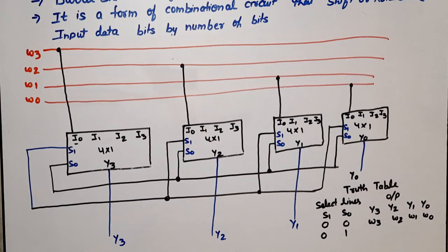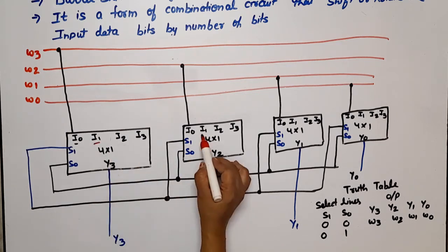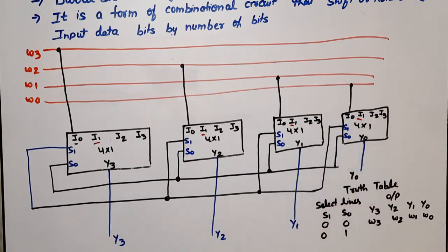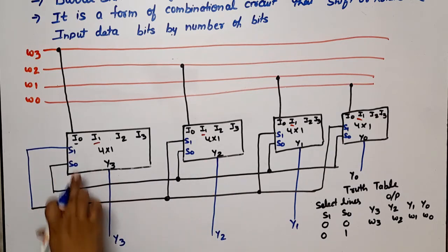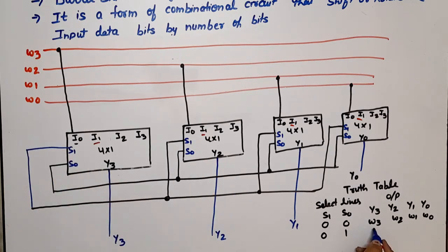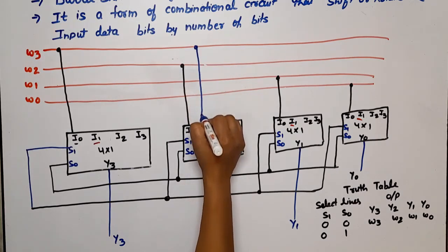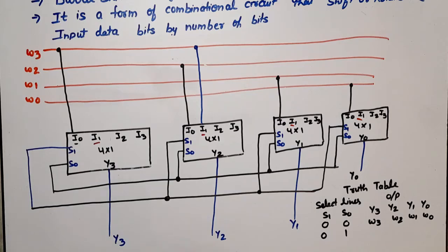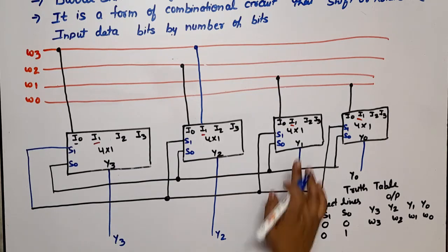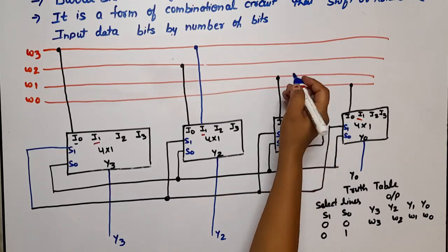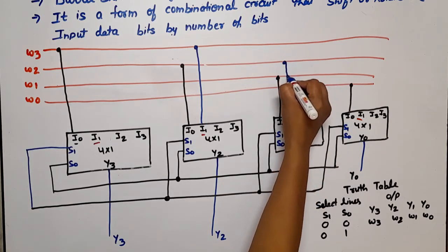When S1=0, S0=1, the I1 input is selected on all MUXes. Now shifting occurs: Y3 gets W2, Y2 gets W1, Y1 gets W0, and for Y0 we apply rotation, so Y0 gets W3. This gives us the output sequence W2, W1, W0, W3 — a right rotation by one bit.